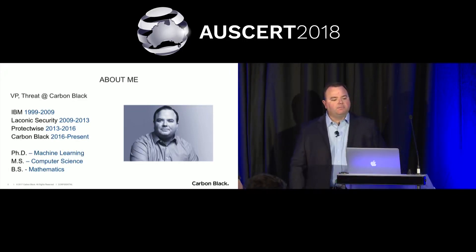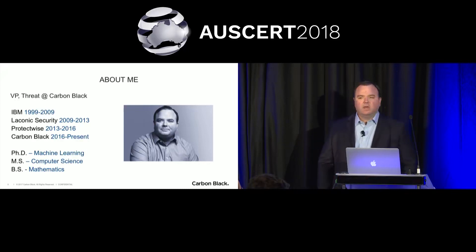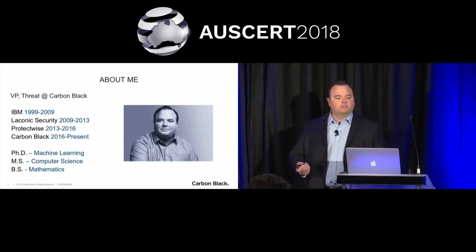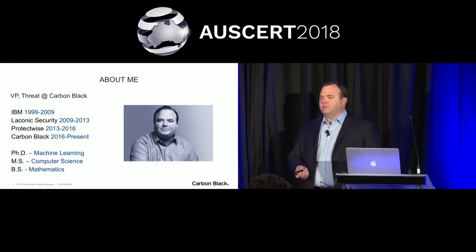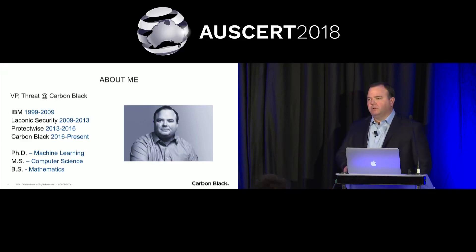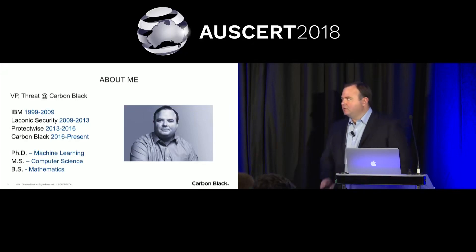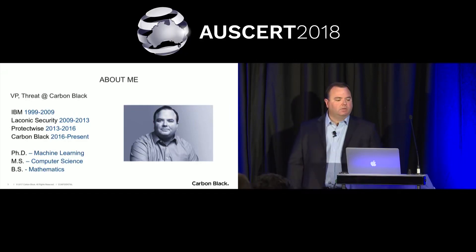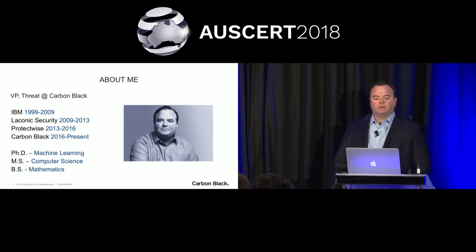I am the VP for Threat at Carbon Black, which means I sit in an organization that is a sister organization to our core product engineering group. My group is responsible for all the analytics technology that goes into both our endpoint and the cloud-based analytics that drive the detection and prevention efficacy of our product line. I started my career at IBM in the business intelligence world, transitioned into IBM Security, worked with IBM Zurich Research Lab, and wrote my doctoral dissertation on applications of machine learning and behavioral analysis to post-processing SOC alarms. After 10 years at IBM, I went into the startup world — a crypto company called Meconic, then ran the research team at ProtectWise, a full packet capture network forensics and detection tool, before joining Carbon Black about two years ago.